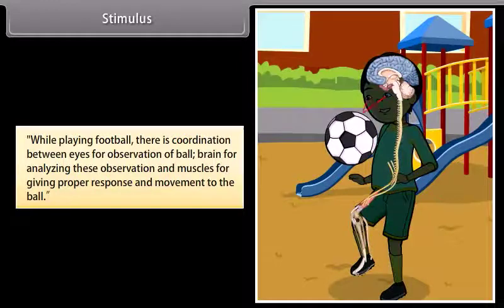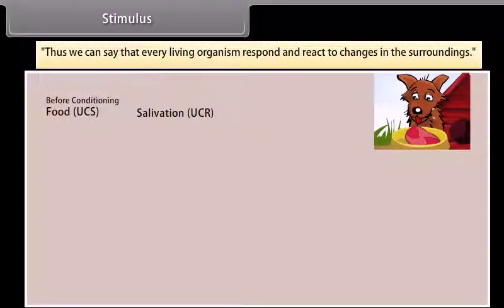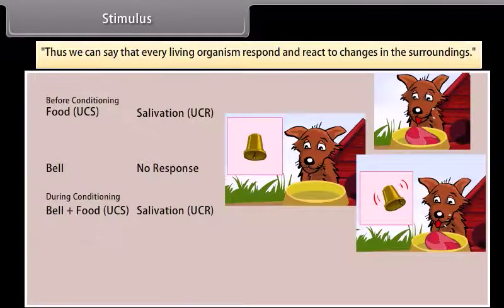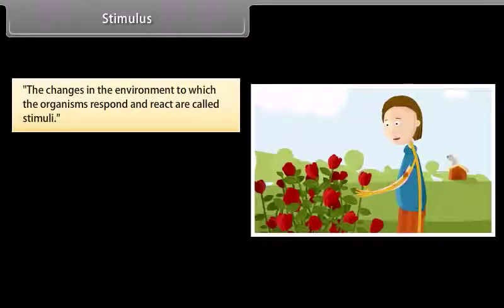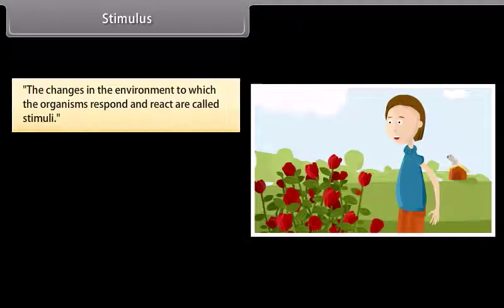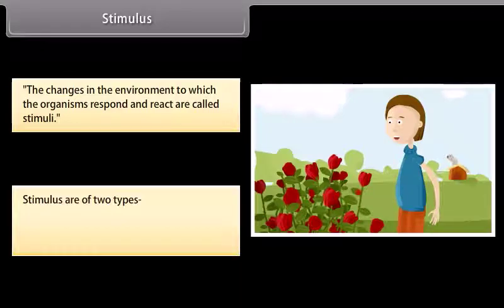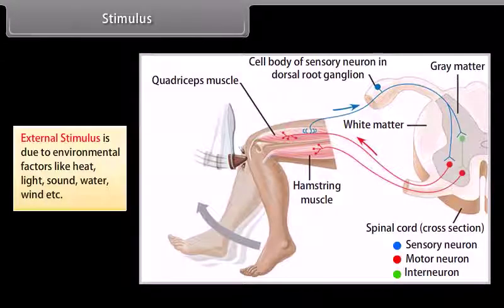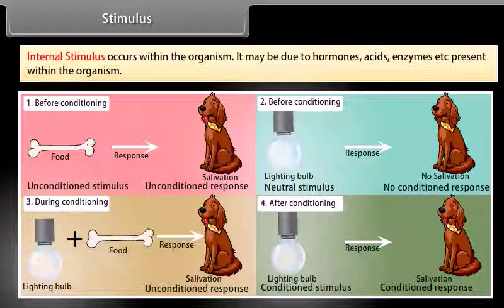While playing football, there is coordination between eyes for observation of the ball, the brain for analyzing these observations, and muscles for giving proper response and movement to the ball. Every living organism responds and reacts to changes in the surroundings. The changes in the environment to which organisms respond and react are called stimuli. Stimuli are of two types: external stimulus, due to environmental factors like heat, light, sound, water, and wind; and internal stimulus, which occurs within the organism and may be due to hormones, acids, enzymes, etc.